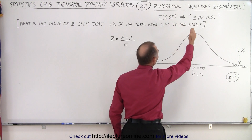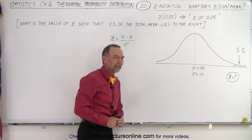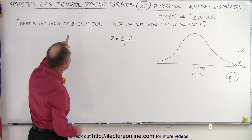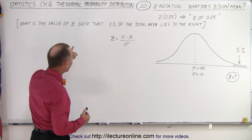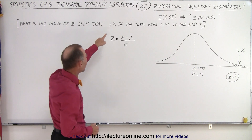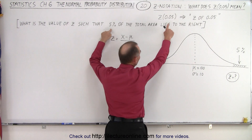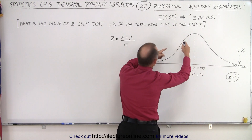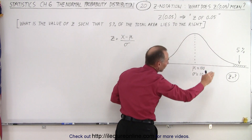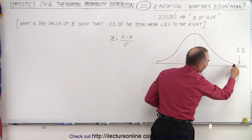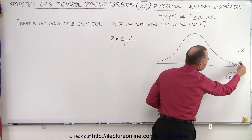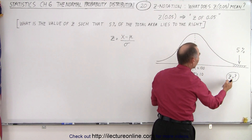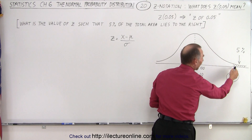You say it as Z of 0.05. What it actually means is that it's the value of Z such that 5% — 0.05 is 5% — of the total area underneath the normal distribution curve lies to the right. So we're looking for this being 5%. That's what we mean by Z of 0.05.